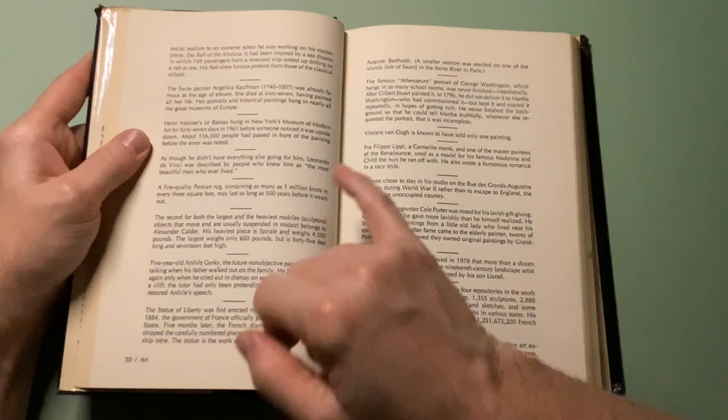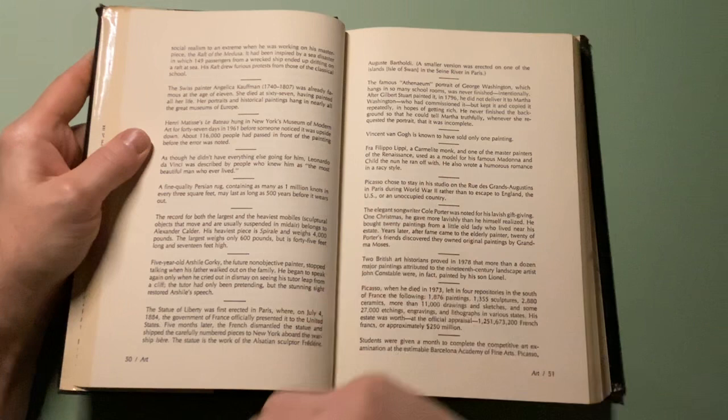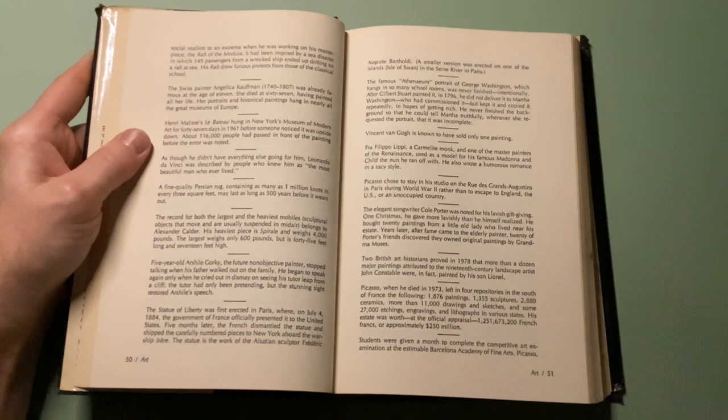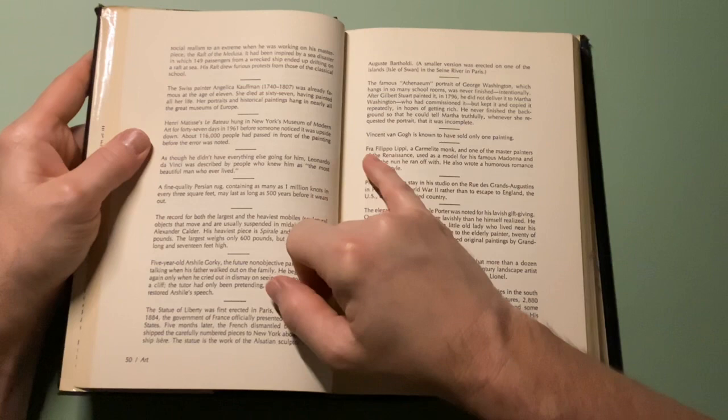Fra Filippo Lippi, a Carmelite monk and one of the master painters of the Renaissance, used as a model for his famous Madonna and Child a nun he ran off with. He also wrote a humorous romance in a racy style. Well, I guess that was Fra Filippo. I didn't know that. He was a monk. I don't know what that means. Anyway.